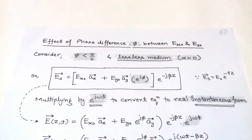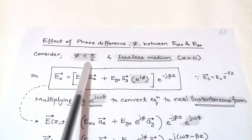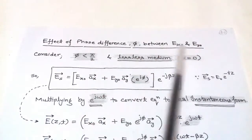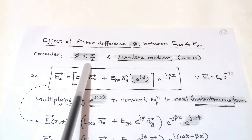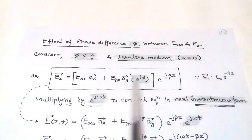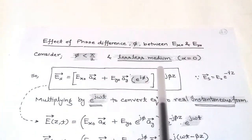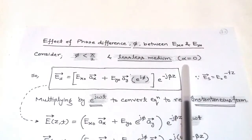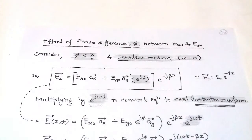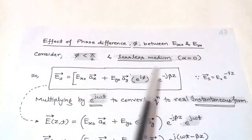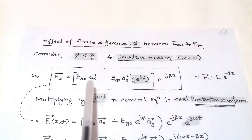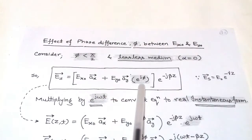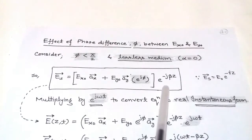We consider a phase difference between the X component and Y component of E, where this phase difference is less than π/2. We also consider a lossless medium, where there is no attenuation, so α equals 0. Under these conditions, Es vector equals (Ex₀ unit vector X + Ey₀ unit vector Y · e^(jφ)) · e^(−jβz).